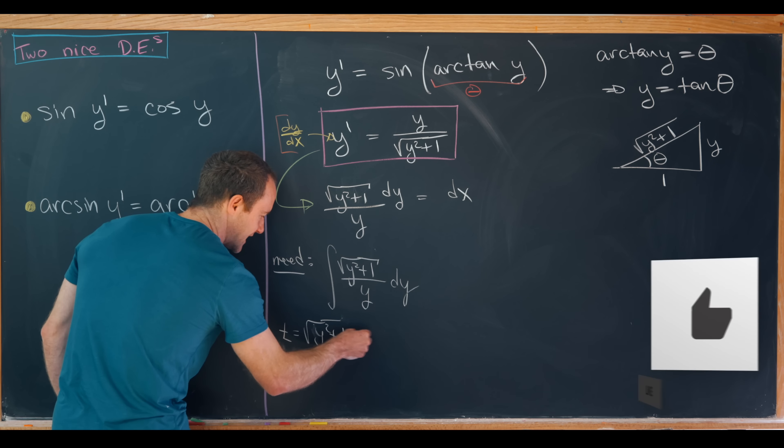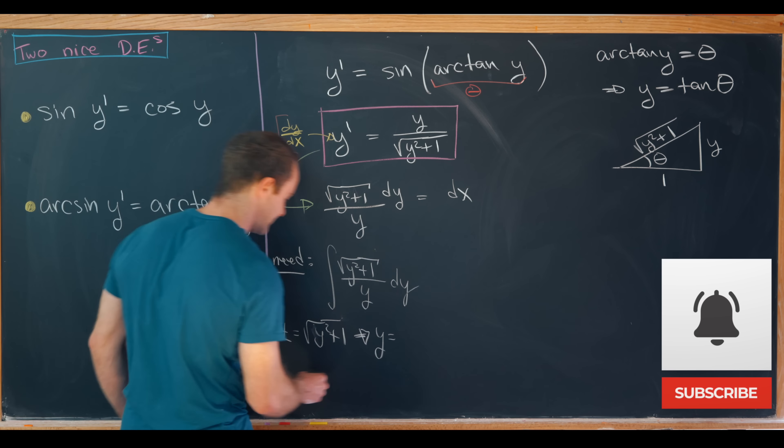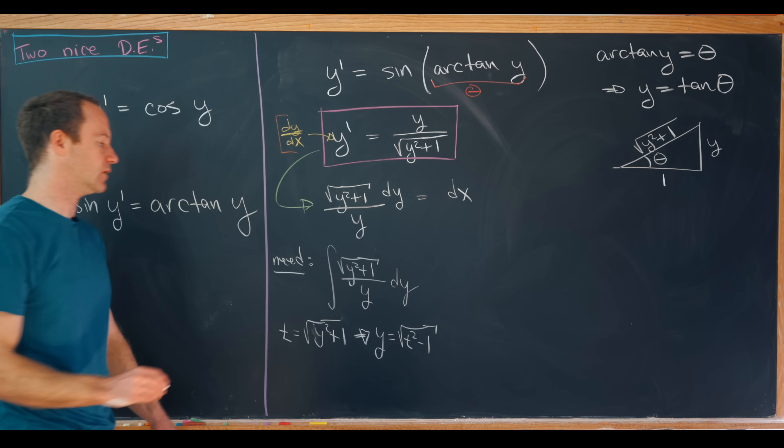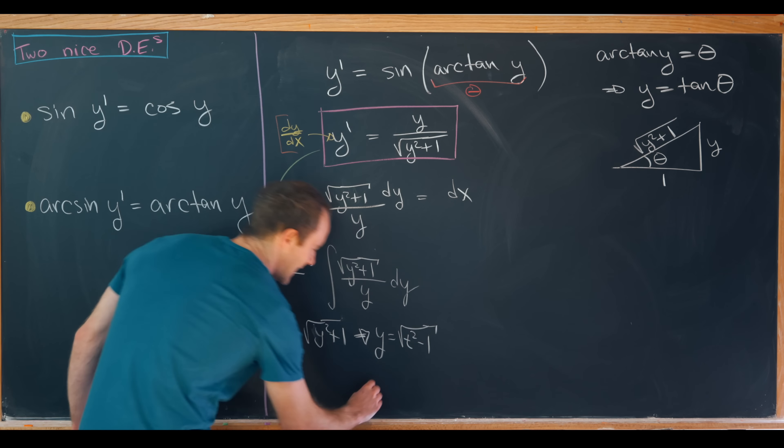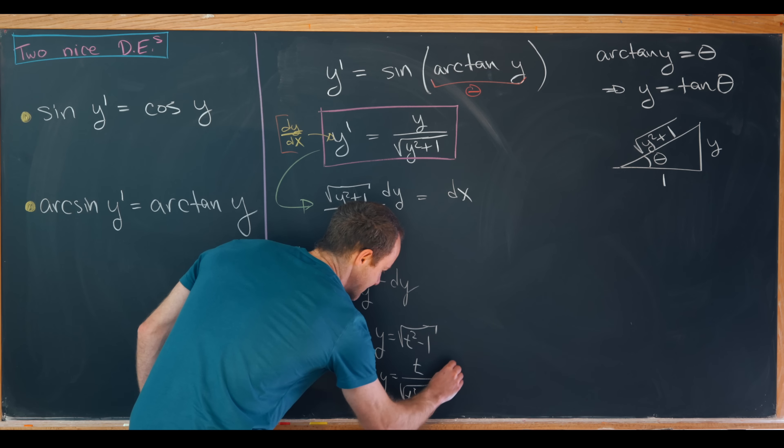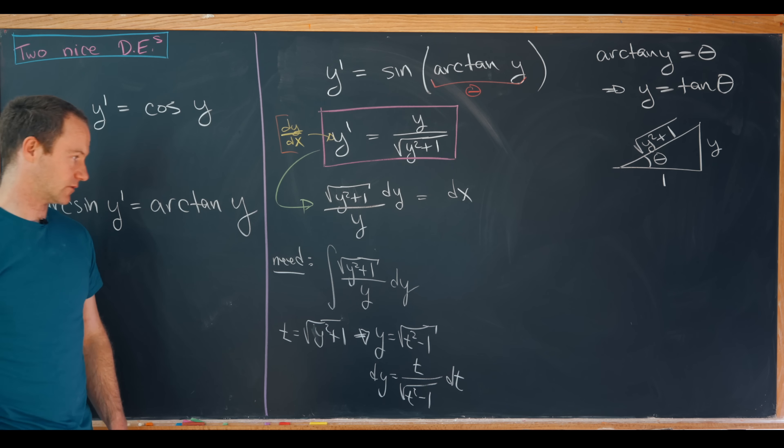And then we can solve that for y and we'll see that y is in fact equal to the square root of t squared minus 1. That's not too hard to see. But that makes dy equal to t over the square root of t squared minus 1 dt. Again that's pretty straightforward using the chain rule.